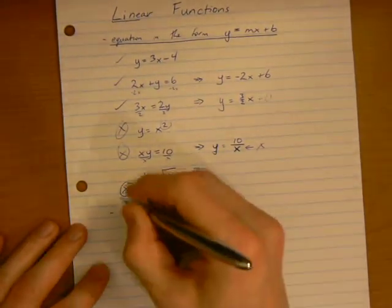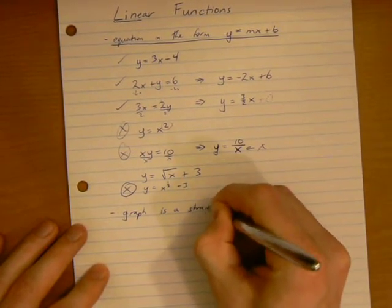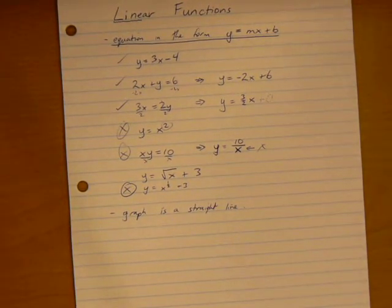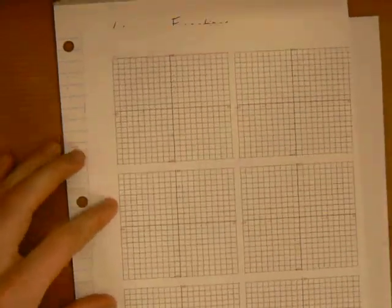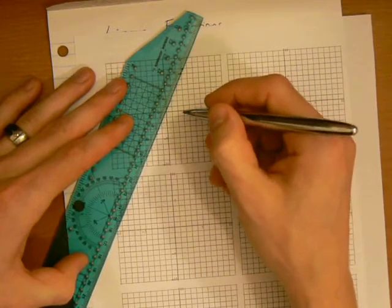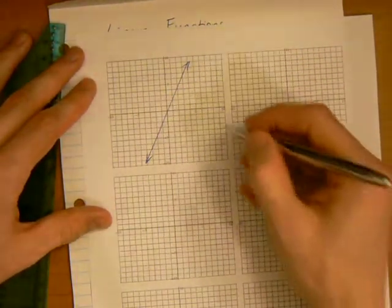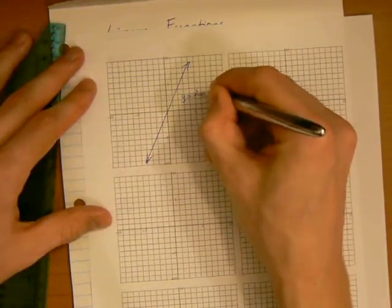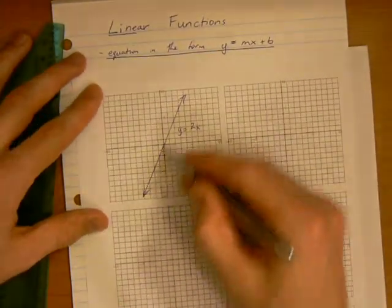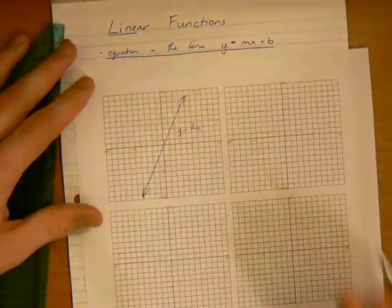Another way we can tell if we have a linear function, if the graph is a straight line. Let's draw some graphs, see what those look like. So, I grab my ruler. Let's draw a line something like this. Here we have a straight line. We can find the equation of this. It would be y equal to 2x plus 0. No y intercept is 0. So, we can already see that we have a straight line, which means it's linear. And if we look at the equation of that, it's also in that format. So, these two concepts are kind of related.